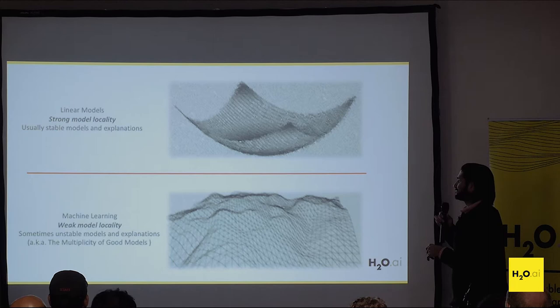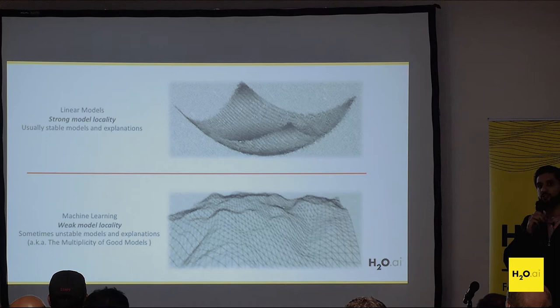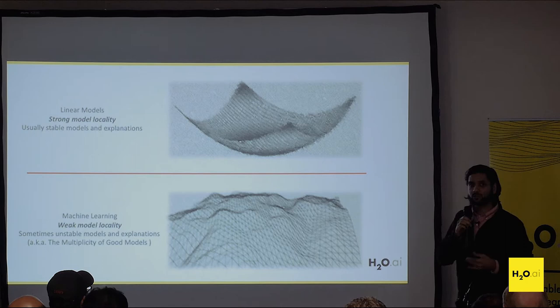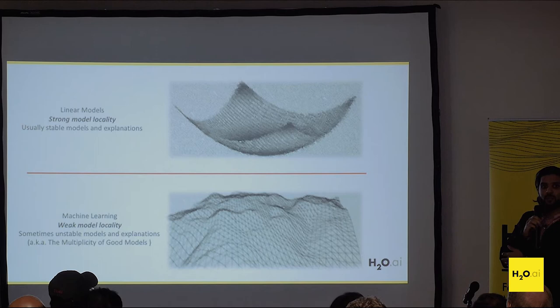The problem with machine learning is it has weak model locality. Sometimes the models can be pretty unstable — as I showed earlier with that plot where the model was going haywire — and it's kind of difficult to explain to someone what's really going on with a complex machine learning model. Think of a highly deep neural network or a GBM with thousands of trees. It's very difficult to explain what's happening.